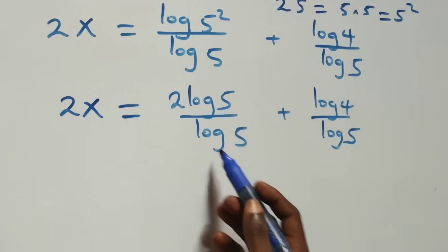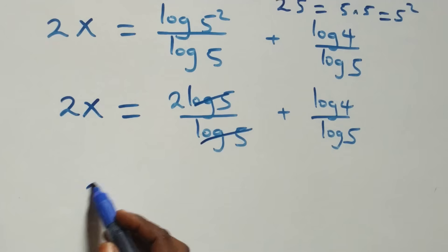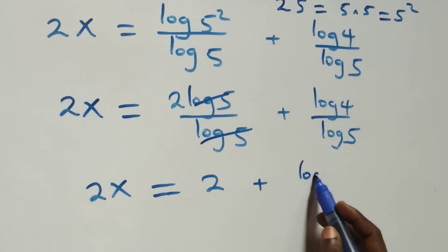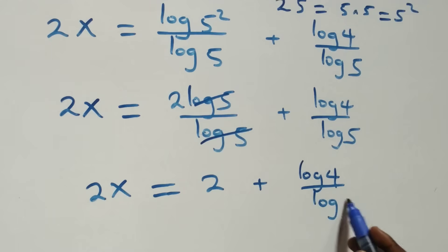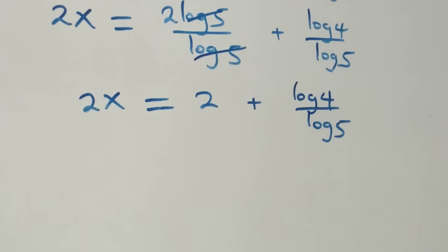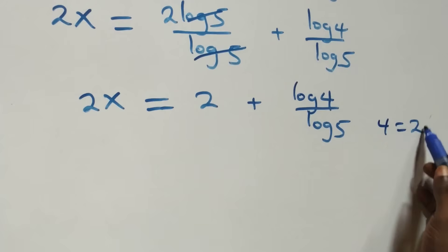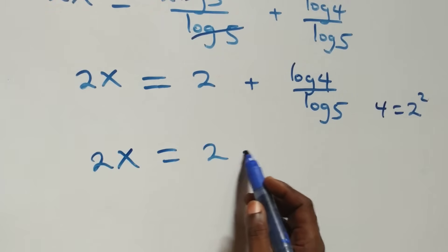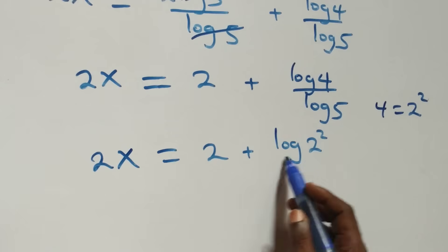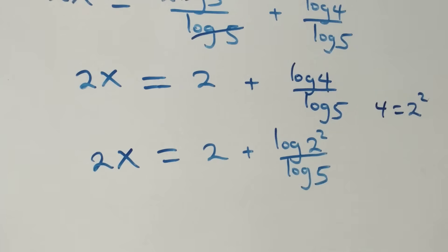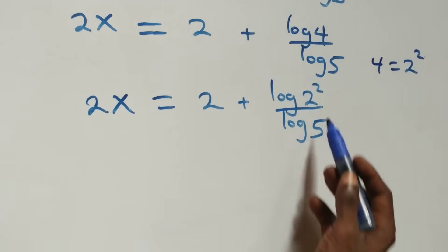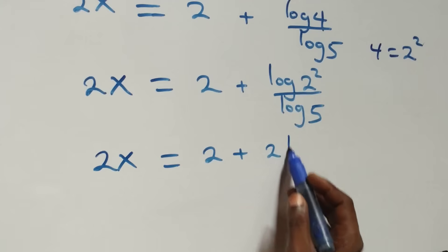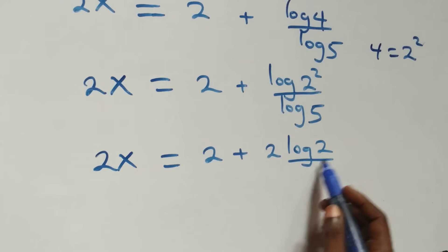Log 5 cancels with log 5, leaving 2. So 2x equals 2 plus log 4 over log 5. Then we can express 4 as 2 times 2, the same thing as 2 squared. Applying the power rule of logs, 2 comes out. So what we have becomes 2x equals 2 plus 2 log 2 over log 5.